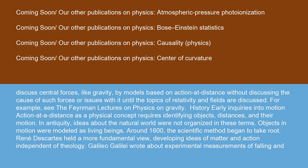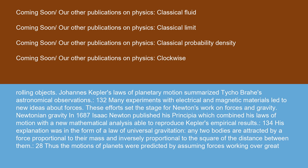History: Early inquiries into motion. Action at a distance as a physical concept requires identifying objects, distances, and their motion. In antiquity, ideas about the natural world were not organized in these terms. Objects in motion were modeled as living beings. Around 1600, the scientific method began to take root. René Descartes held a more fundamental view, developing ideas of matter and action independent of theology. Galileo Galilei wrote about experimental measurements of falling and rolling objects. Johannes Kepler's laws of planetary motion summarized Tycho Brahe's astronomical observations. Many experiments with electrical and magnetic materials led to new ideas about forces. These efforts set the stage for Newton's work on forces and gravity.